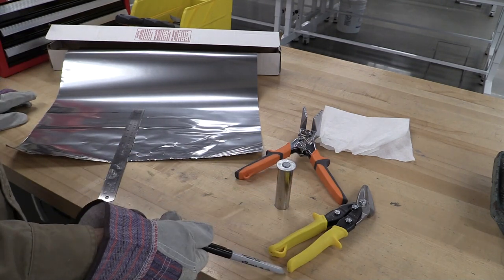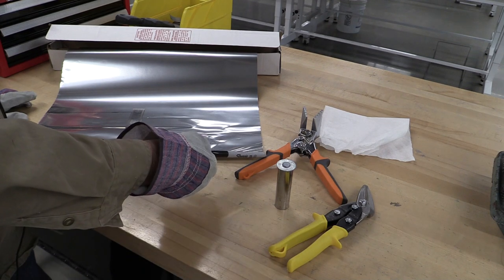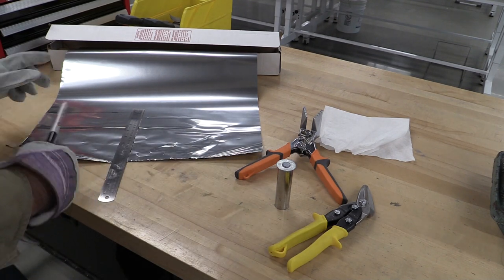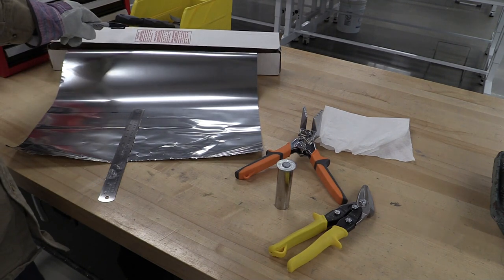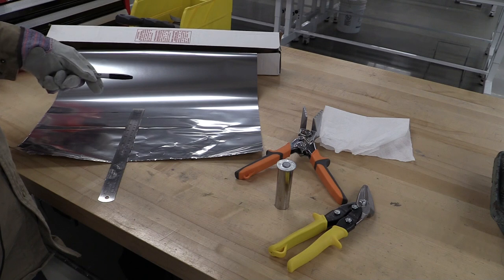The things we have here are a pair of tin snips, a set of folders and crimpers, a ruler, a sharpie, and we're working with 321 stainless steel foil wrap that's two thousandths thick.